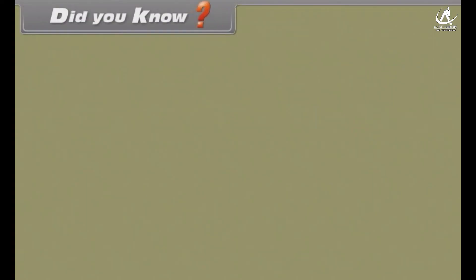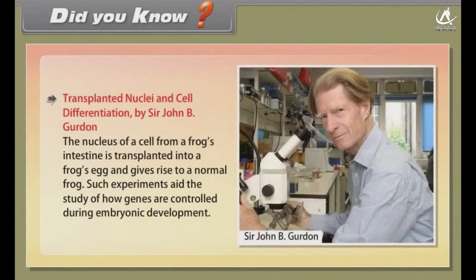Did you know? Transplanted nuclei and cell differentiation by Sir John B. Gurdon. The nucleus of a cell from a frog's intestine is transplanted into a frog's egg and gives rise to a normal frog. Such experiments aid the study of how genes are controlled during embryonic development.